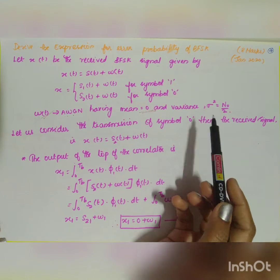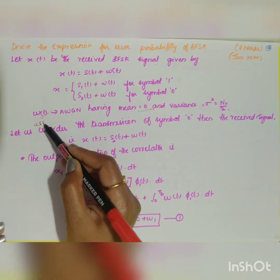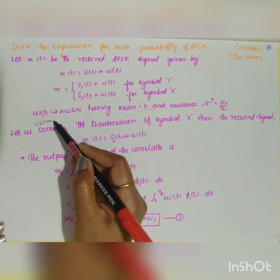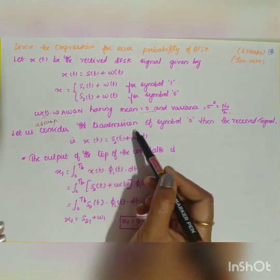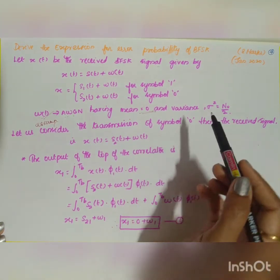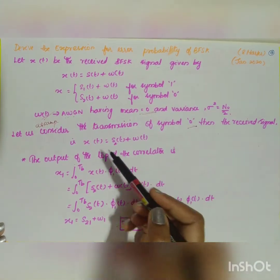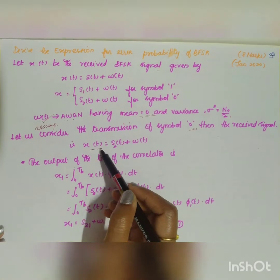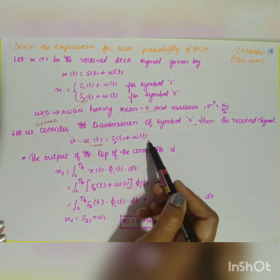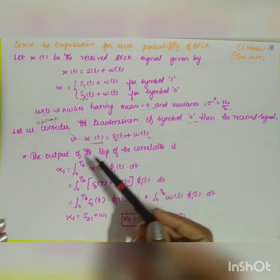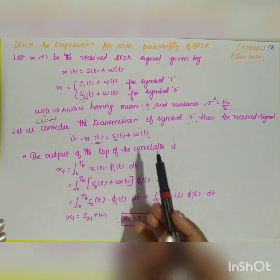For the assumption step, let us consider that symbol 0 was transmitted. Then the received signal x(t) = s2(t) + w(t). The output of the top correlator is x1 and the bottom correlator gives x2.